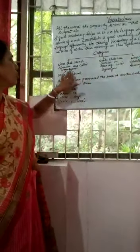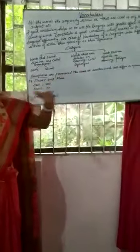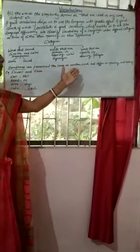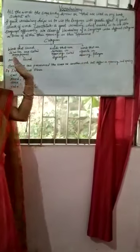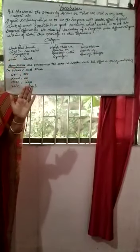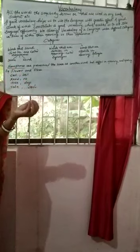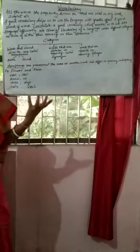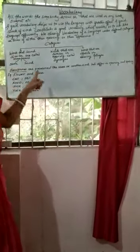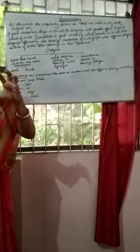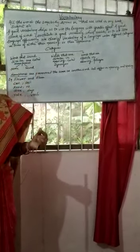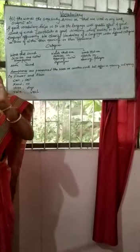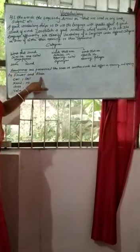Now, homophones are pronounced the same, but they differ in meaning and spelling. For example: flower — F-L-O-W-E-R — is a flower like a rose. And flour — F-L-O-U-R — is the grinding part of any grain. For example: we roll pieces of meat in flour and then we fry it.